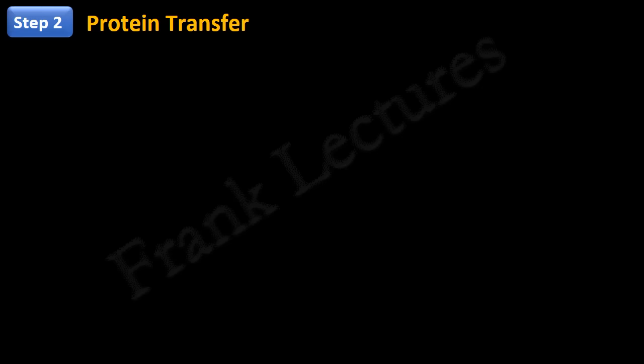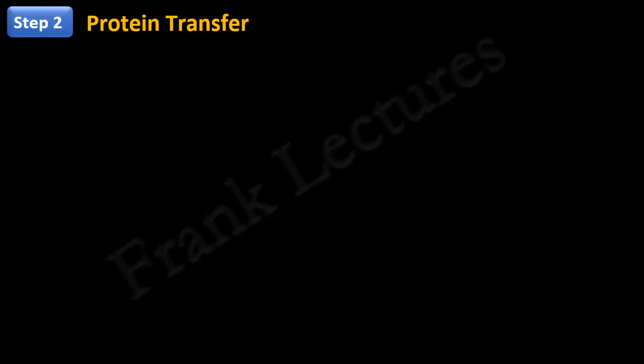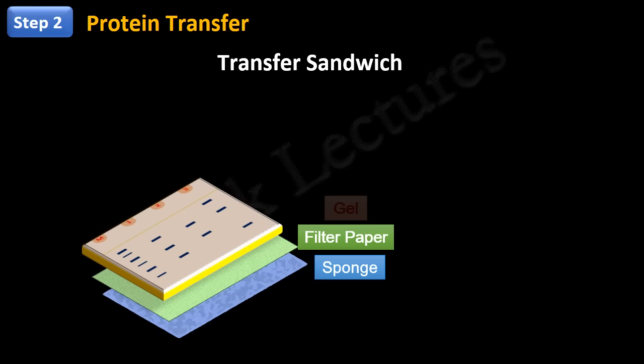For protein transfer, a stack or transfer sandwich of gel and membrane is prepared first. This sandwich also consists of sponge and filter paper. The arrangement of sandwich is like this: sponge, filter paper, gel, membrane, filter paper again, followed by sponge.